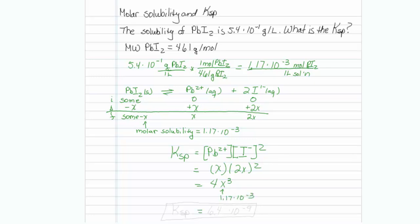And when I put that in my calculator, my KSP turns out to be 6.4 times 10 to the minus 9th. So that's how you go from molar solubility to KSP.